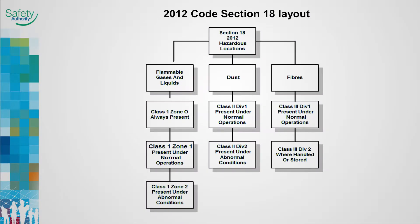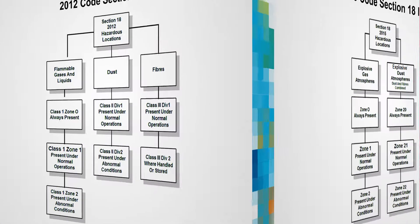In the 2012 Code, hazardous locations were organized into three classifications depending on the nature of the hazard: flammable gases or vapors, combustible or conductive combustible dusts, and easily ignitable fibers or flyings. In the 2015 Code, hazardous locations have been reorganized into two classifications: Explosive Gas Atmospheres, which includes gases, vapors, or mists.